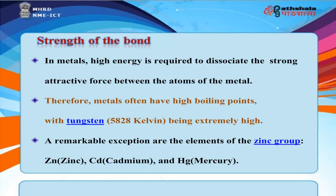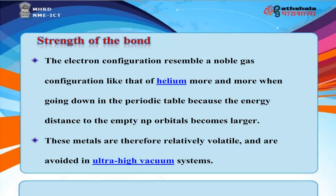In metals, high energy is required to dissociate the strong attractive force between atoms. Metals often have high boiling points, with tungsten at 5828 K being extremely high. A remarkable exception is the zinc group: Zn (zinc), Cd (cadmium), and Hg (mercury). Their electron configuration resembles a noble gas configuration more and more when going down the periodic table, because the energy distance to the empty np orbitals becomes larger. These metals are therefore relatively volatile and are avoided in ultra-high vacuum systems.